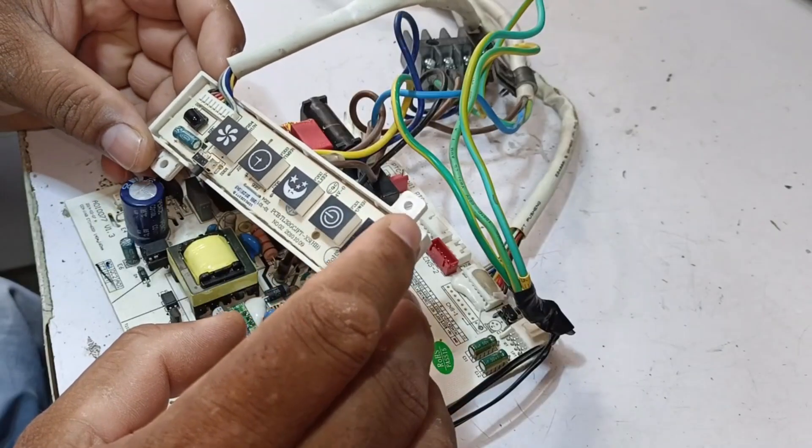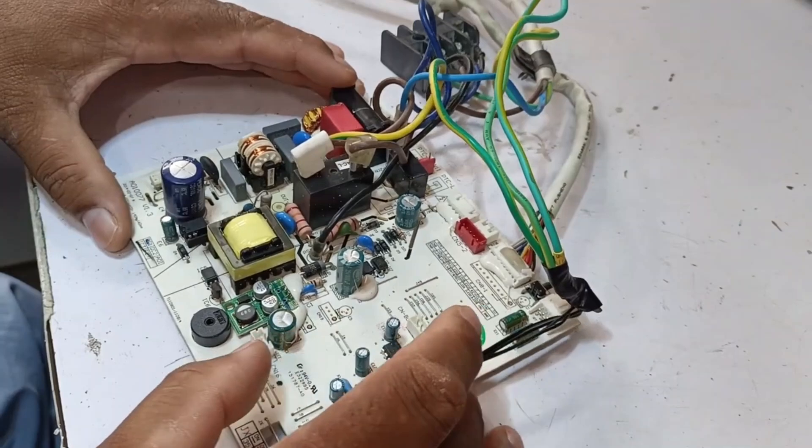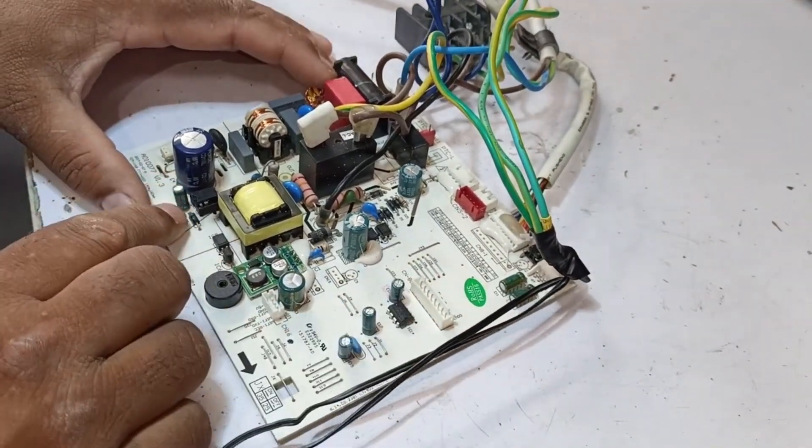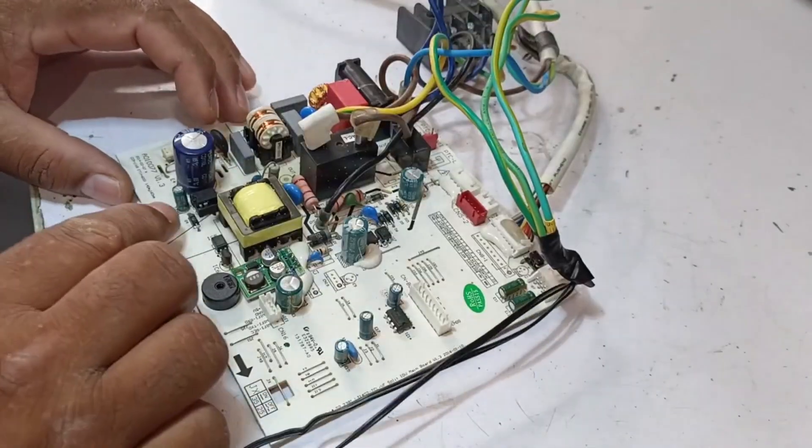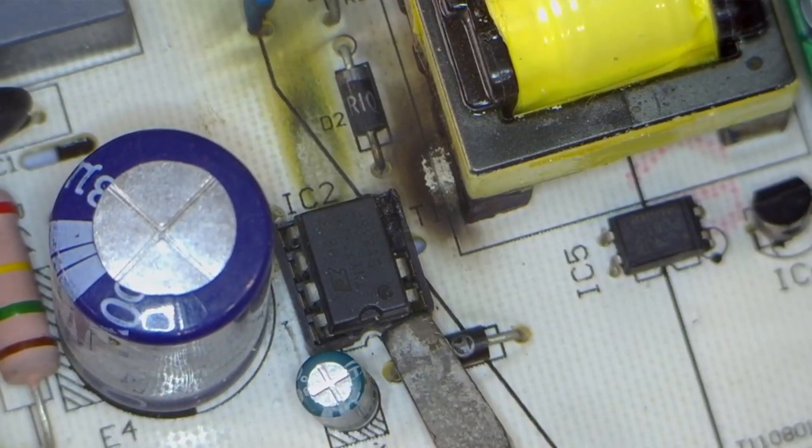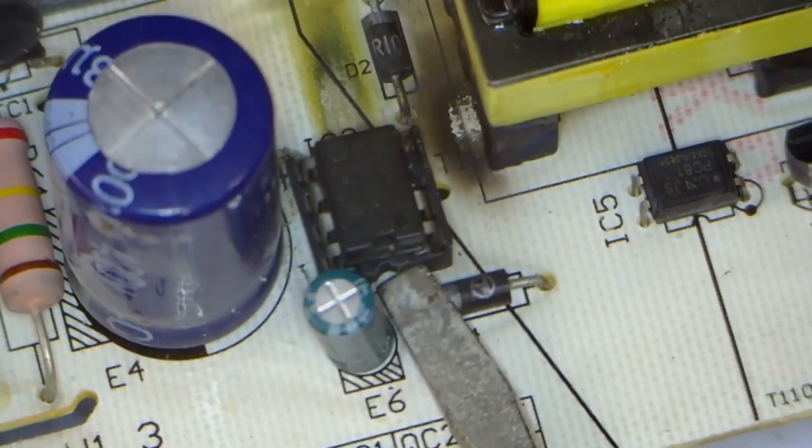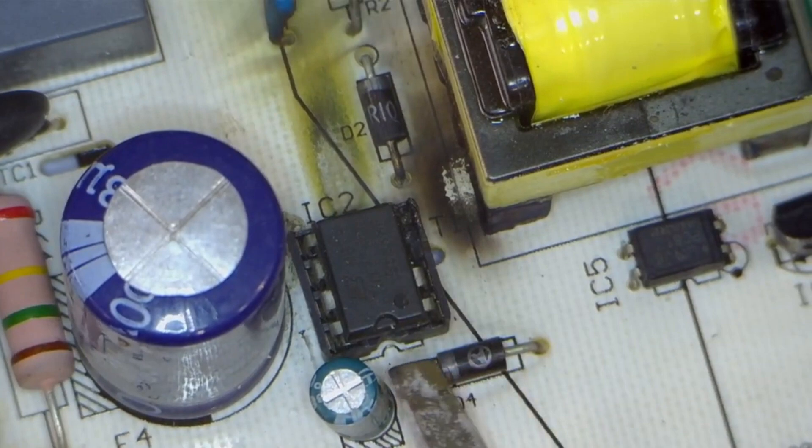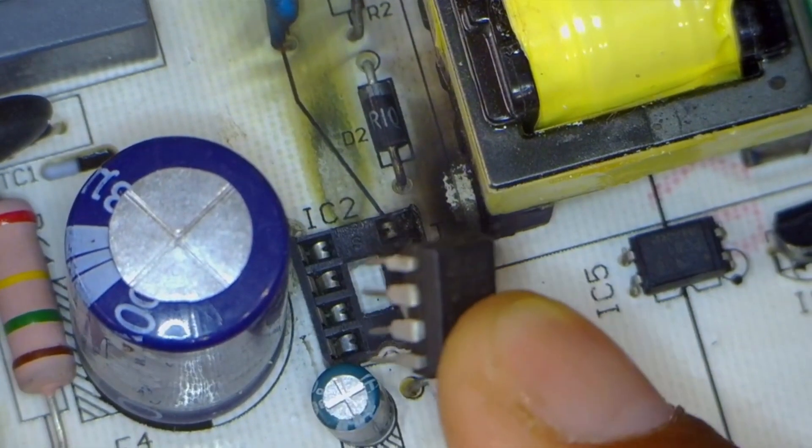Now, we'll check what the cause of this is, but before that, we'll try to repair this PCB and see if it can be fixed. Here, there's an IC, which is a switching IC, and underneath this switching IC, someone has already soldered the base. So we can easily remove this IC, and I've successfully taken it out.